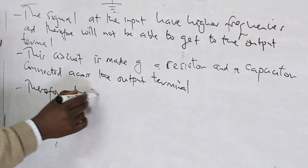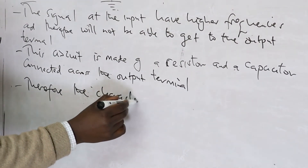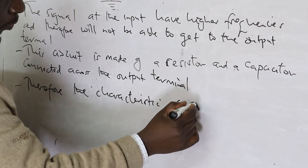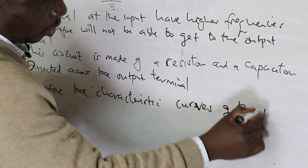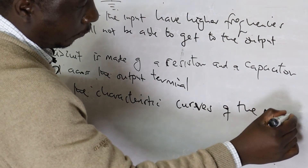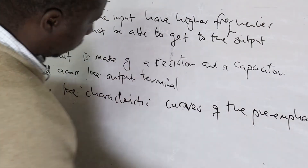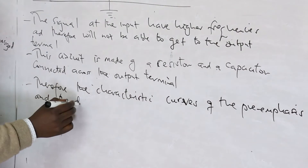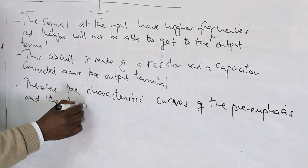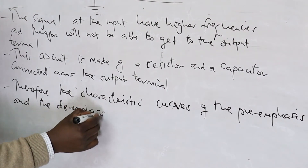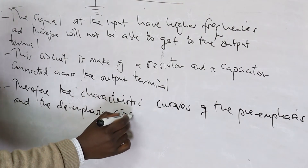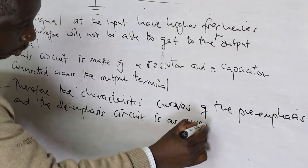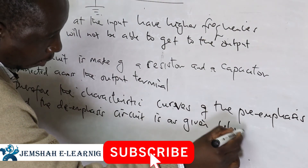Therefore, the characteristic curves of the pre-emphasis and the de-emphasis — the circuit is as given below.